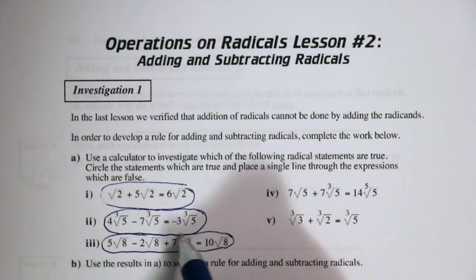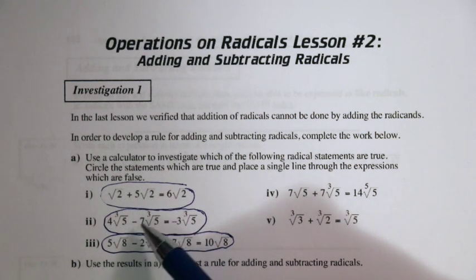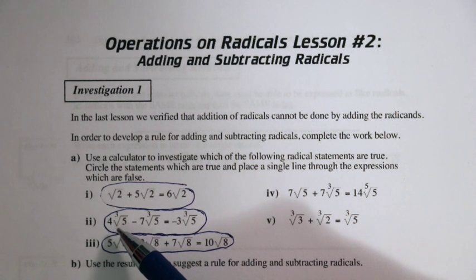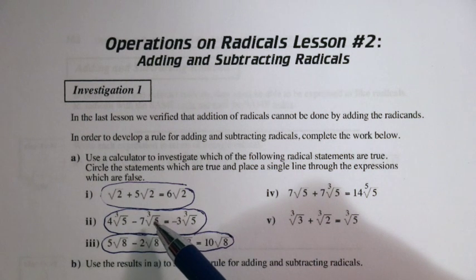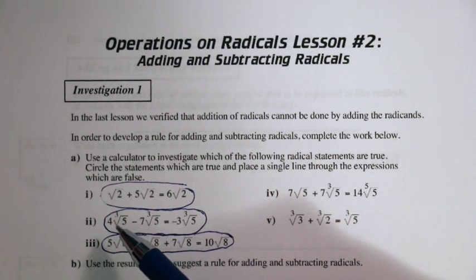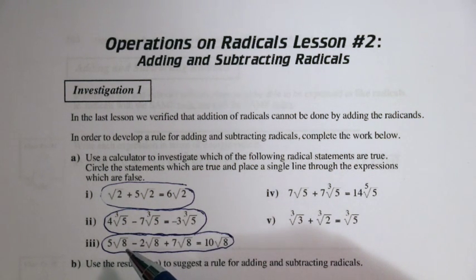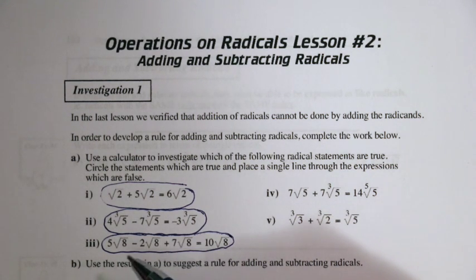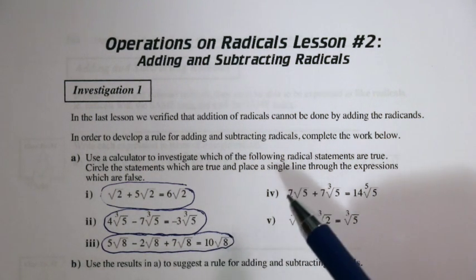What are we noticing here? In the first case, we had five of something plus one of that exact same thing. Here we have four of the cube root of five, minus seven of that same quantity, so four minus seven is negative three. And here we have five of root eight, minus two root eight, plus seven root eight — five minus two is three, plus seven is ten, giving us ten of root eight.